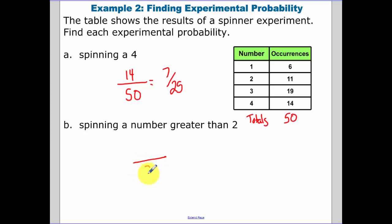Spinning a number greater than two. I don't know why I wrote 20 there. That should be a 50. So spinning a number greater than two. Three is greater than two, and four is greater than two. So add those two together, we get 33 out of 50.